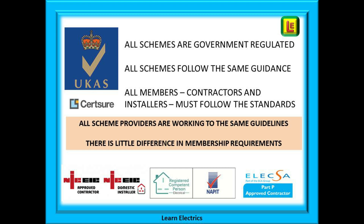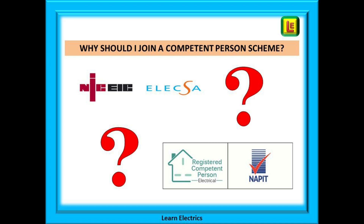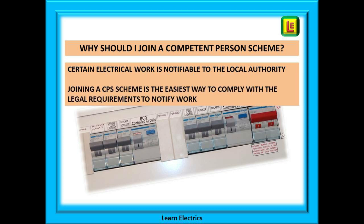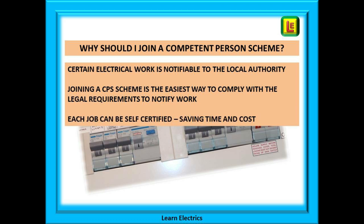So we can start with the question: why should I join a competent person scheme? Certain types of electrical work are notifiable to the local authority, and if you carry out these types of work you are required by law to notify them. Becoming a member is the easiest way to comply with these legal requirements. As a CPS member, you can self-certify your own work.